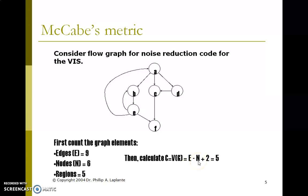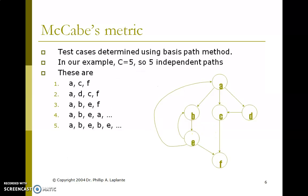McCabe's metric test cases are determined using the basis path method. For example, C equals 5, so there are 5 independent paths: a-c-f, a-d-c-f, a-b-e-f, a-b-e-b (loop), and a-b-e again. These are the determined paths using the path method.